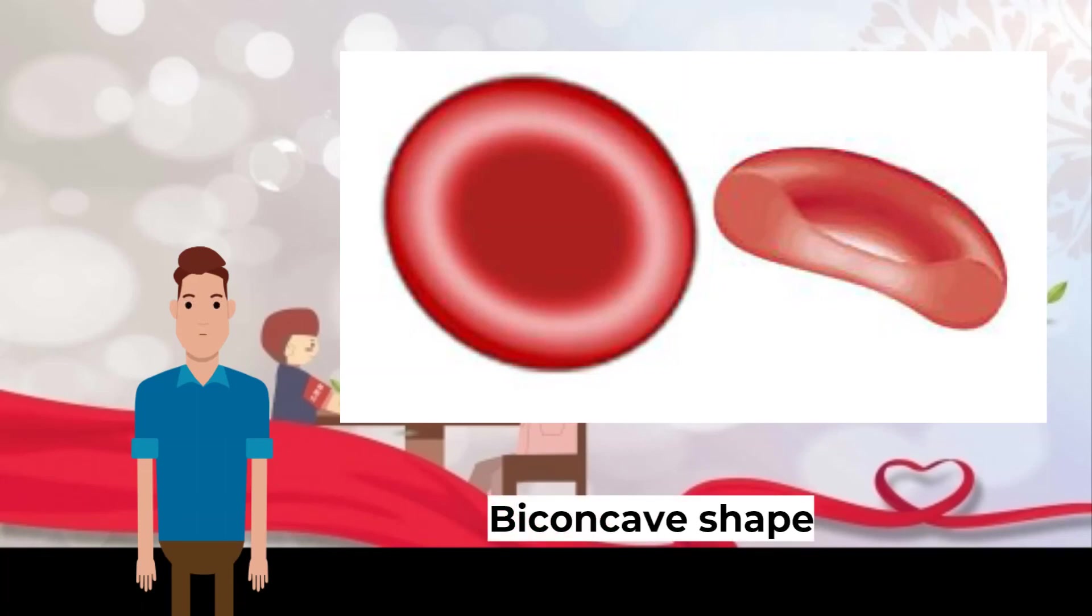Secondly, red blood cells have a biconcave shape. This is a disc shape with a thinner center section. This maximizes surface area for oxygen diffusion leading to faster loading and unloading of oxygen. Lastly, red blood cells are very small and flexible, allowing them to squeeze through capillaries and be as close as possible to the cells that need oxygen.